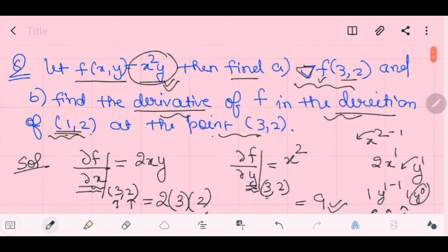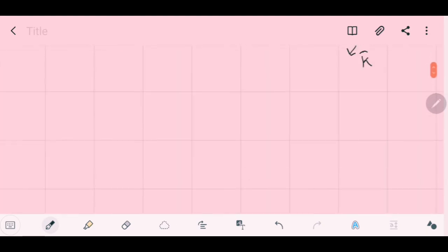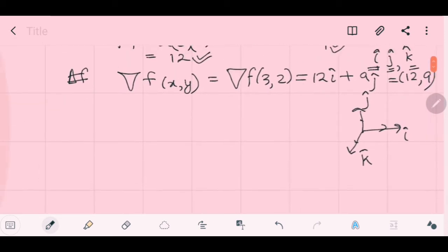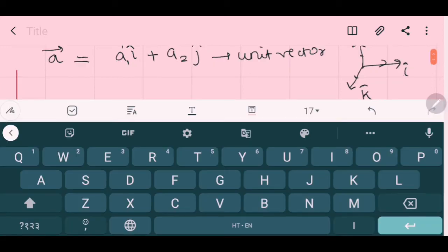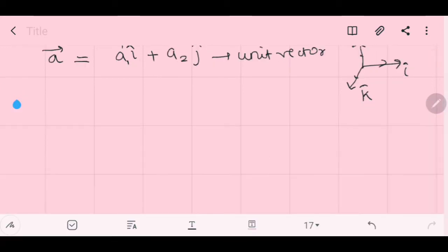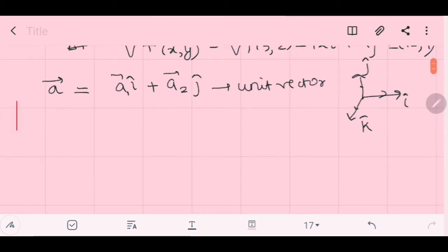So you need to, because this function is in 2 variables, so you need to take 1 variable and any vector, let's say a. Let us suppose a is a vector, a directional derivative vector, and this vector is having a₁i in x direction and a₂j in y direction. Now, this is a unit vector, for example. Unit vector means whose magnitude is 1. You know how to find out magnitude, I'll tell you.